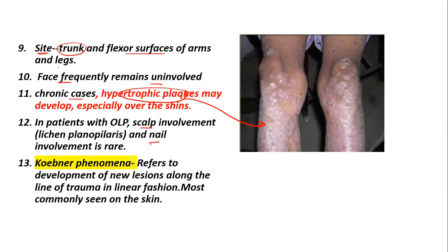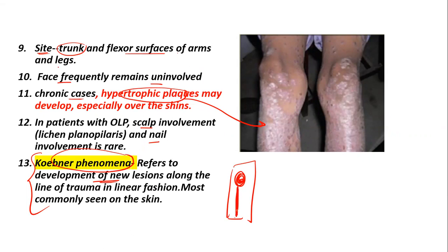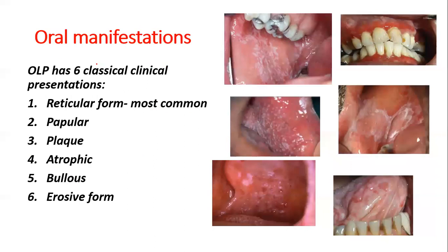There is an associated Koebner phenomenon — the development of new lesions along the line of trauma. So if there is a pre-existing lesion and you scratch along a line, within one to two weeks a new lesion would develop there. The oral manifestations of lichen planus have six classical presentations: reticular, papular, plaque, atrophic, bullous, and erosive — which will be discussed in the next video.